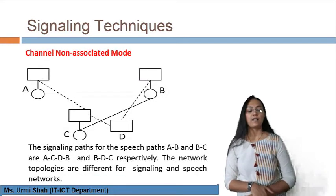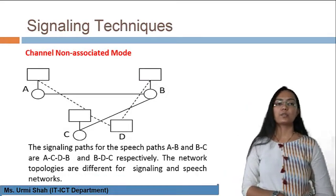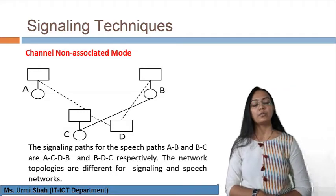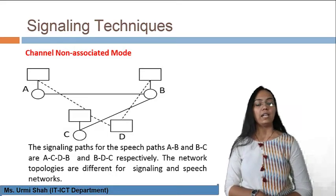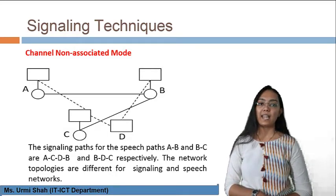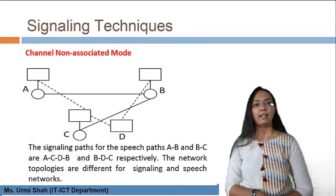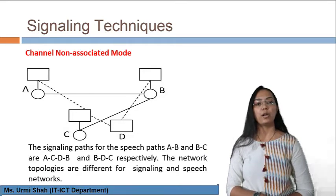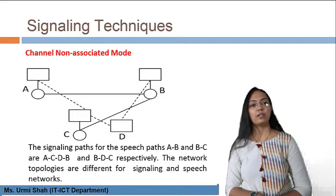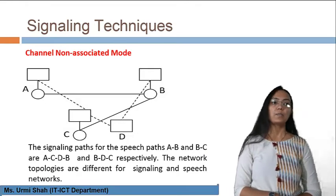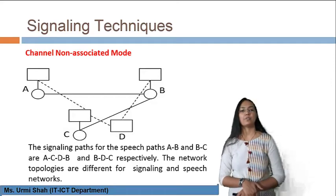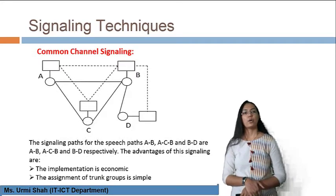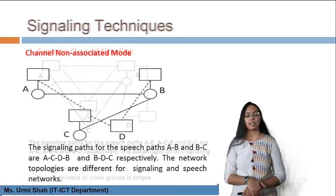In the channel non-associated mode, the signaling path for speech paths A-B and B-C are A-C-D-B and B-D-C respectively. The network topologies are different for the signaling network and the speech network — that is the key difference between channel non-associated mode and the channel-associated common channel signaling technique.